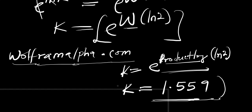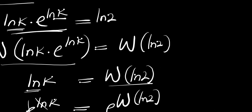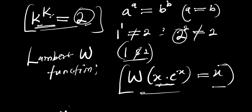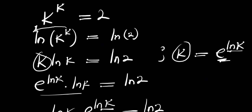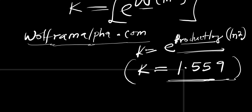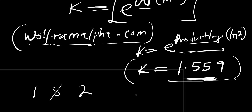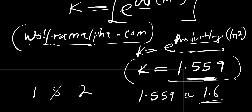So k ≈ 1.559 is the value that satisfies the equation k to the power of k equals 2. As you can see on the graph at the website, this answer falls between 1 and 2, just as we reasoned earlier. You can also approximate it as 1.6 if you wish. That's it for the video — thank you and goodbye.